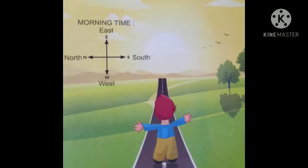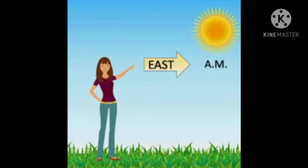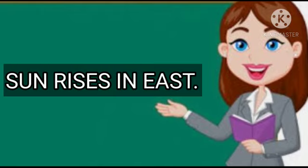Children, to understand better about direction, in the morning stand facing towards the sun. The direction from where the sun rises is called East. So in the morning when you are facing towards the sun, it means you are facing towards East.